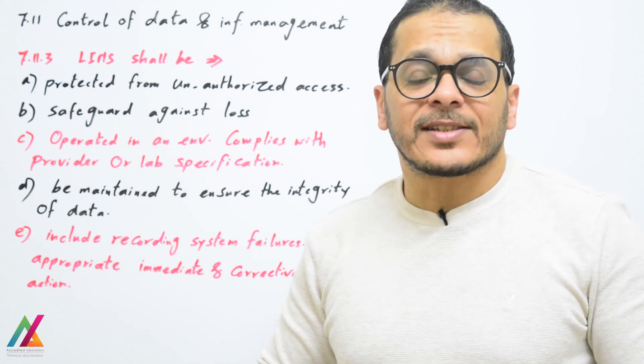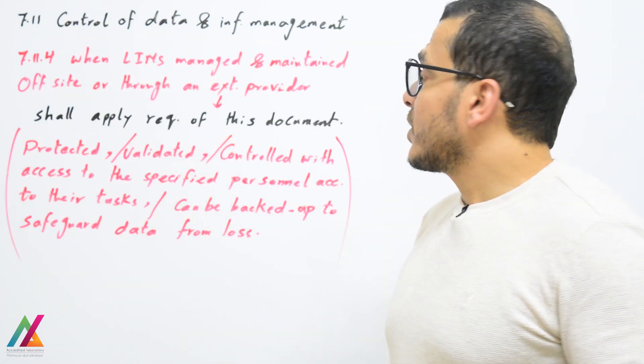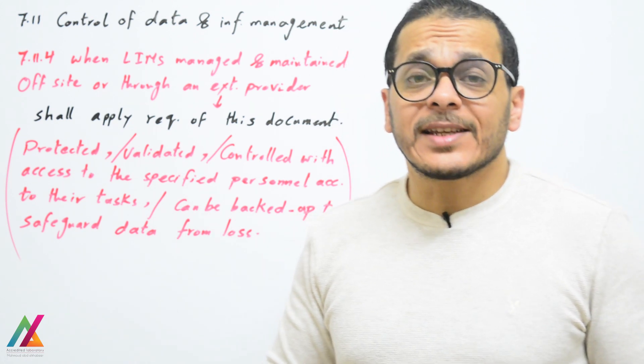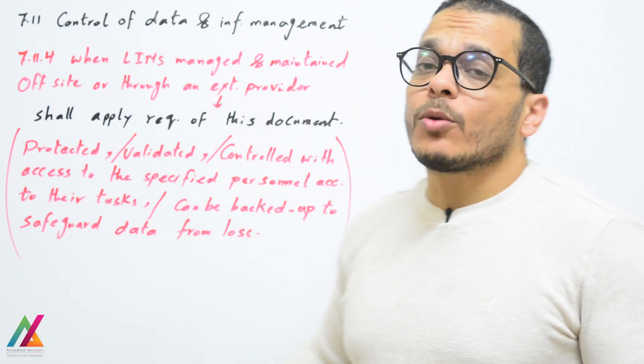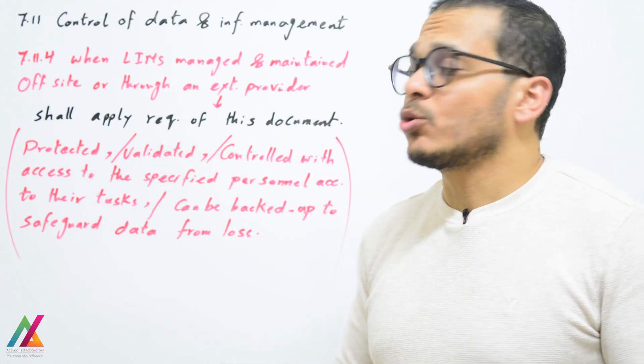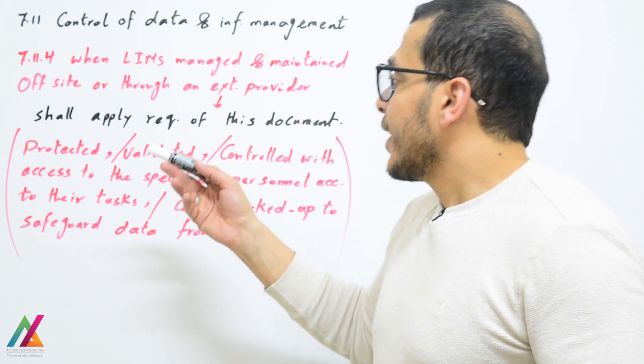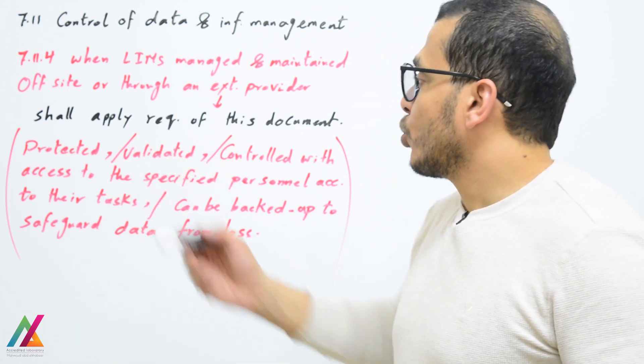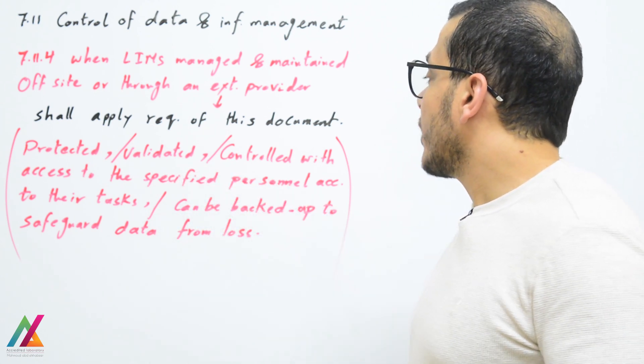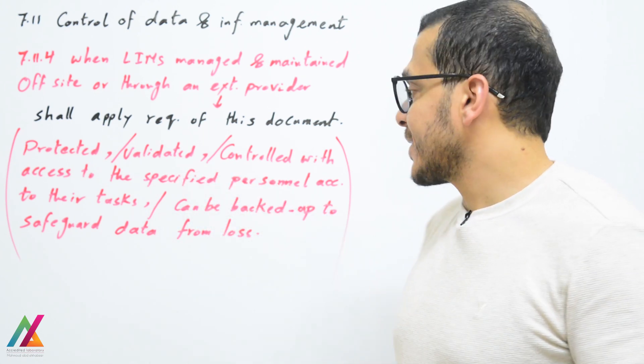When LIMS is managed and maintained off-site or through an external provider, this external provider shall comply with the requirements of this document and apply all requirements such as: the software shall be protected, validated, controlled with access to specified personnel according to their tasks, and backed up to safeguard data from loss.